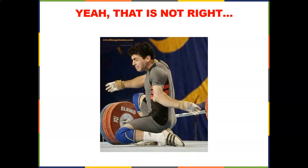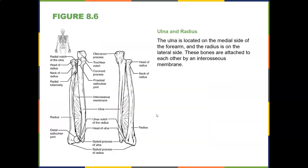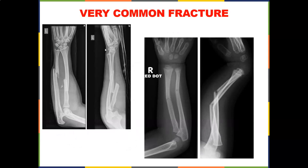That would be a dislocated radius and ulna — not in the anatomical position. The ulna is on the medial side of the forearm and the radius on the lateral side. These bones are attached to each other by the interosseous membrane. Here's a very common fracture — in an adult, the epiphyseal plates have closed. In a child, they haven't, and there's still bone development occurring. These are green stick fractures — like when you break a stick and a little piece is still hanging.